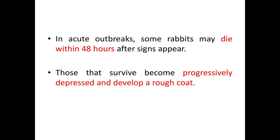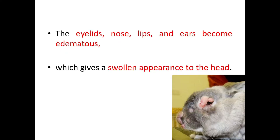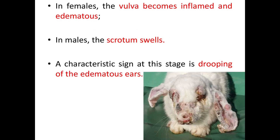Those that survive become progressively depressed and develop a rough coat. The eyelids, nose, lips, and ears become edematous, which gives a swollen appearance to the head as seen in this picture. In females, the vulva becomes inflamed and edematous. In males, the scrotum swells. A characteristic sign at this stage is drooping of the edematous ears.